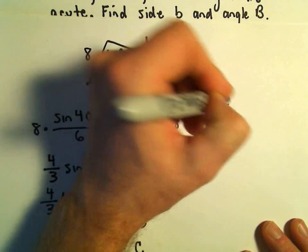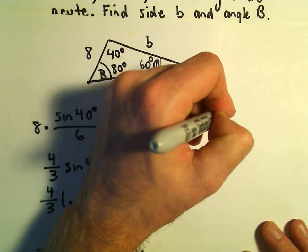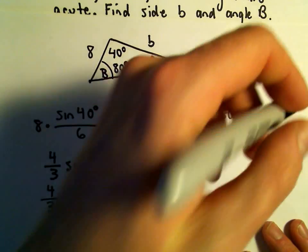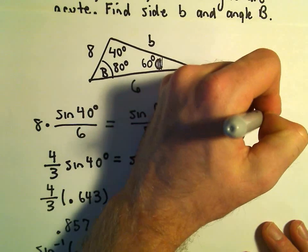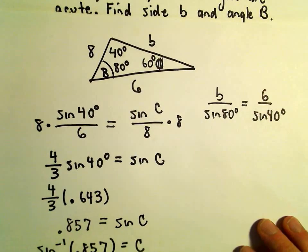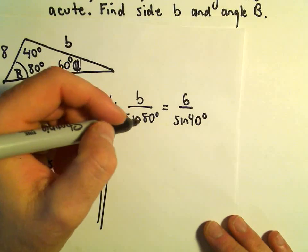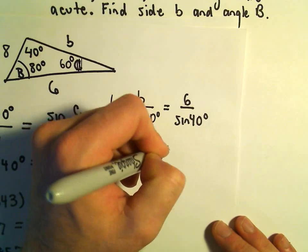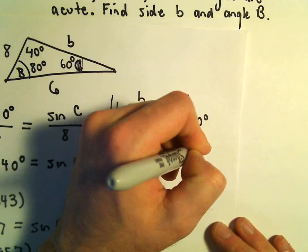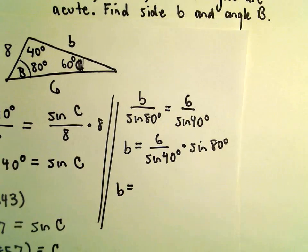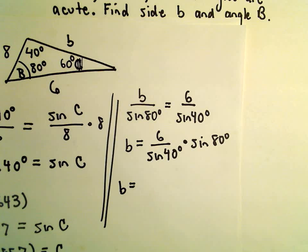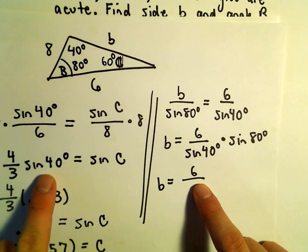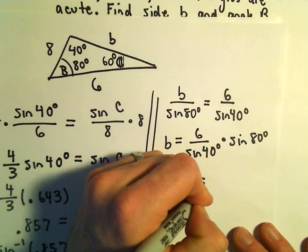We can say our side length b over sine of 80 degrees equals our side length of 6 over sine of 40 degrees. Now simply all we have to do is solve for b. We multiply both sides by sine of 80 degrees, so we would get 6 over sine of 40 degrees times sine of 80 degrees. It's just a matter of plugging this into the calculator. We already said sine of 40 degrees is 0.643, so I'll make use of that.